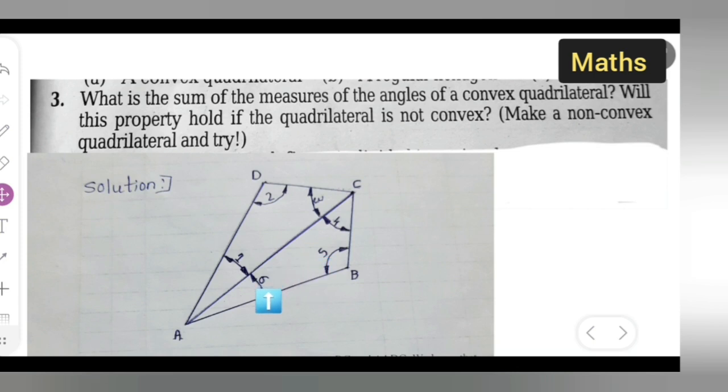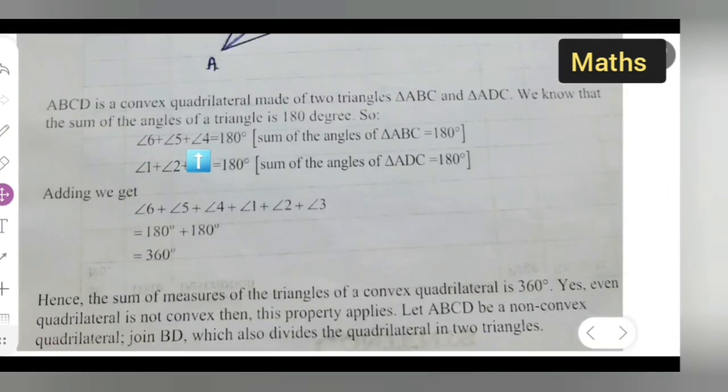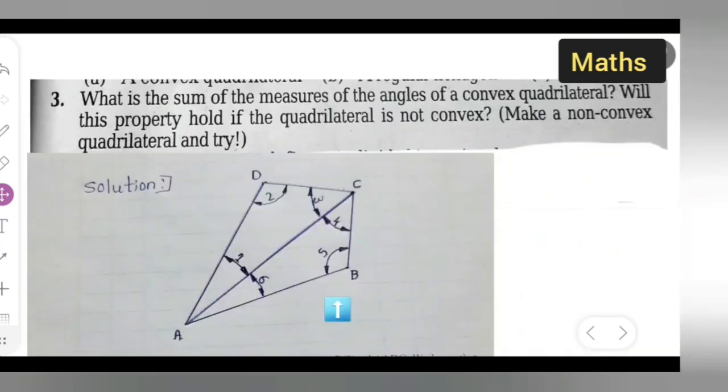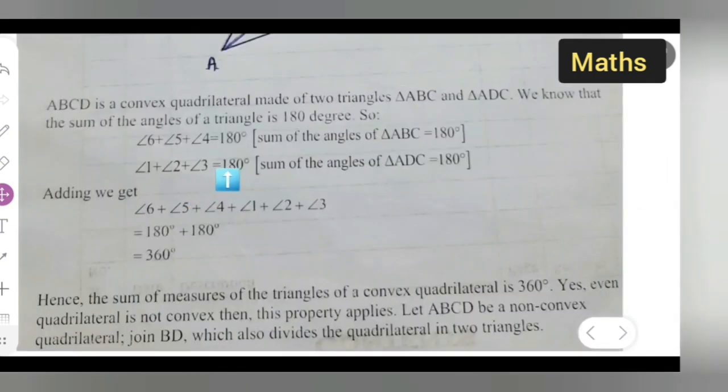Angle 6 plus angle 5 plus angle 4 equals 180 degrees. The reason is: sum of angles of triangle ABC equals 180. Next, for the second triangle, angle 1 plus angle 2 plus angle 3 equals 180. Sum of angles of triangle ADC equals 180 degrees. We have to add all these triangles.